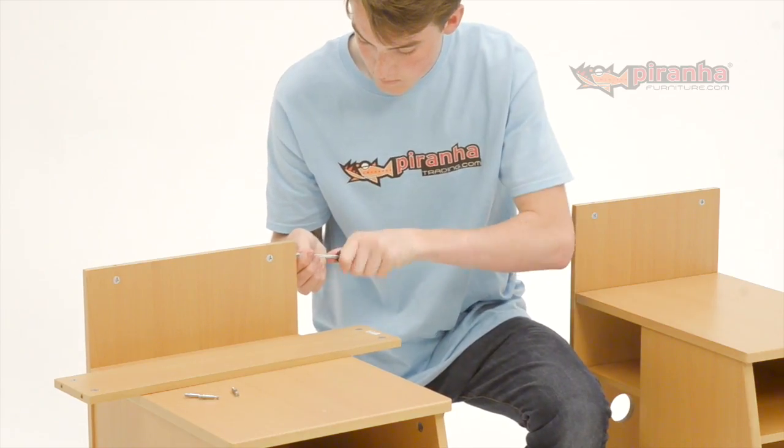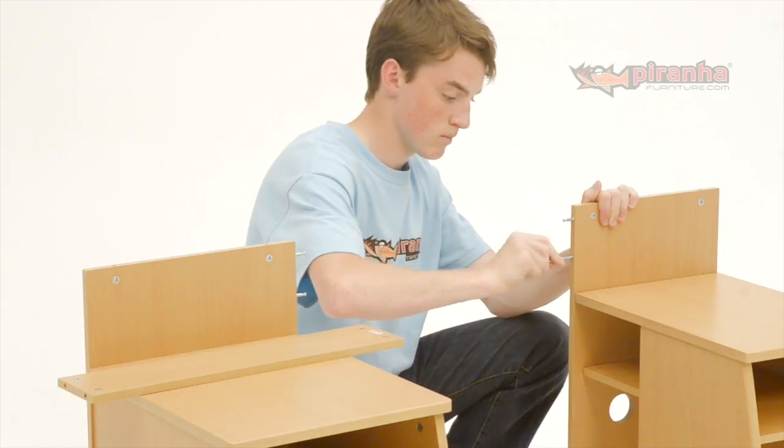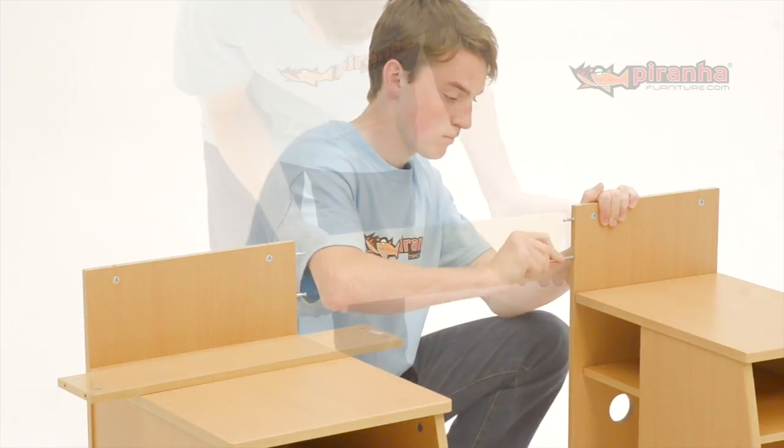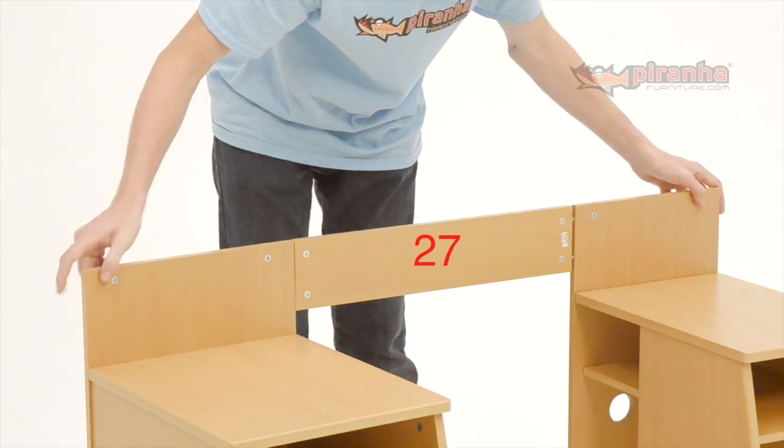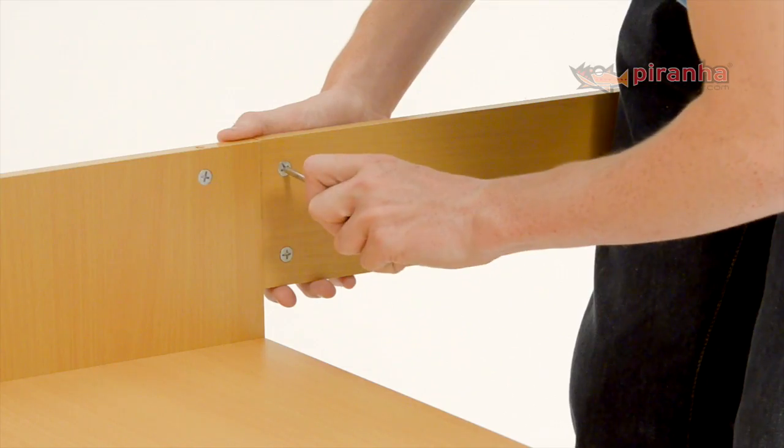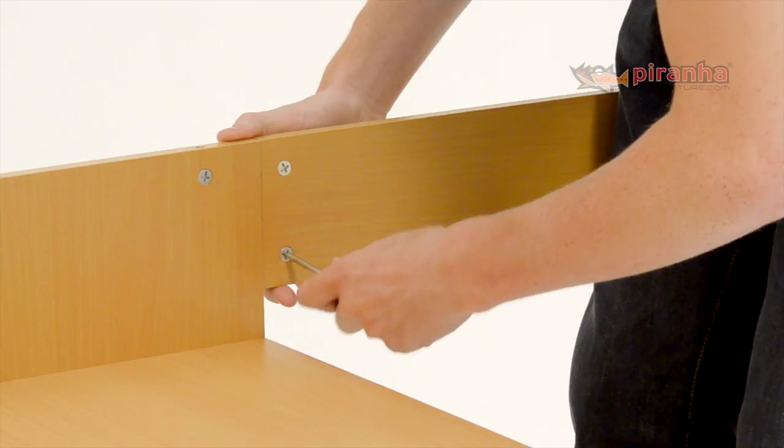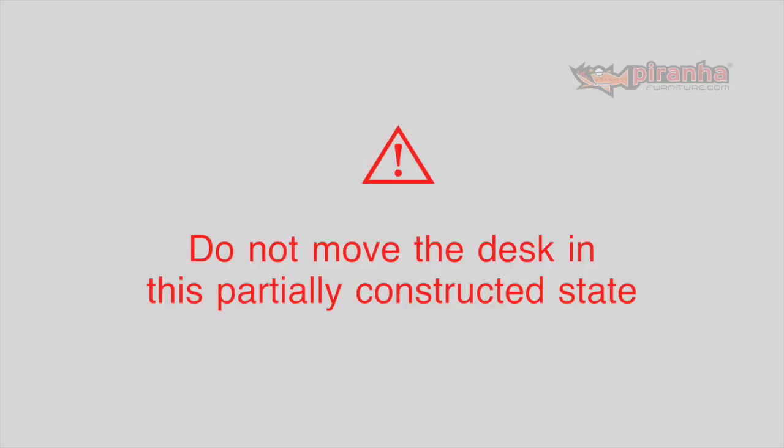Step 17. Screw two of the smaller cam bolts into the pre-drilled holes in the sides of the assembled drawer and cupboard units. Now, sitting the two units side by side, join the middle panel. Don't forget to tighten the connecting pieces to lock the panel in place. Please make sure you don't move the desk now until you have the desktop in place or you could damage the unit.